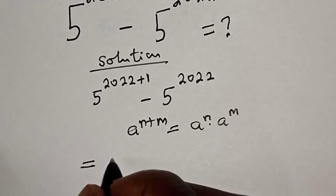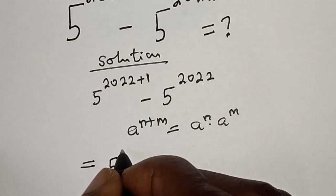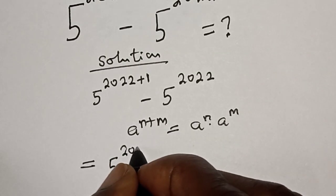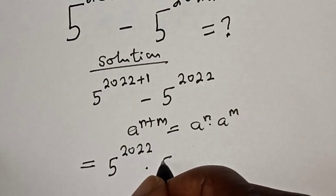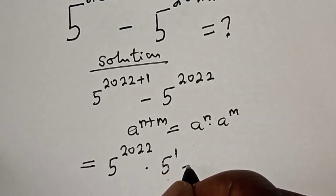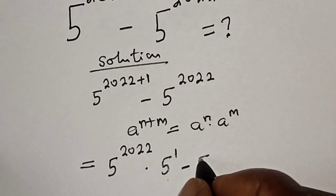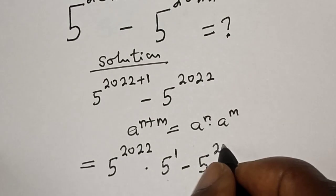Then this equals 5 raised to power 2022 multiplied by 5 raised to power 1, minus 5 raised to power 2022.